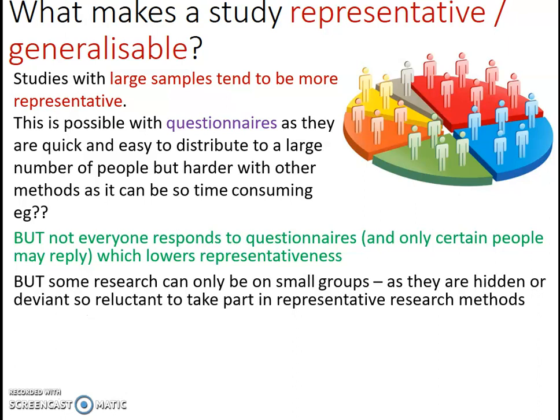Even though we want research to be representative, there are some groups in society that you can only really study in small, unrepresentative groups. These can be hidden or deviant groups — doing something illegal or considered wrong in society, from criminal gangs to students truanting from school. They might be reluctant to take part in representative research methods and wouldn't fill out a questionnaire about their crimes. So you'll have to use unrepresentative methods to study those types of groups, otherwise they won't trust you or talk to you.